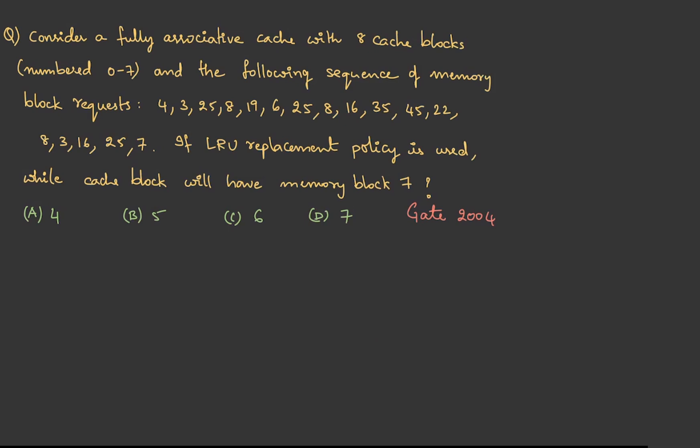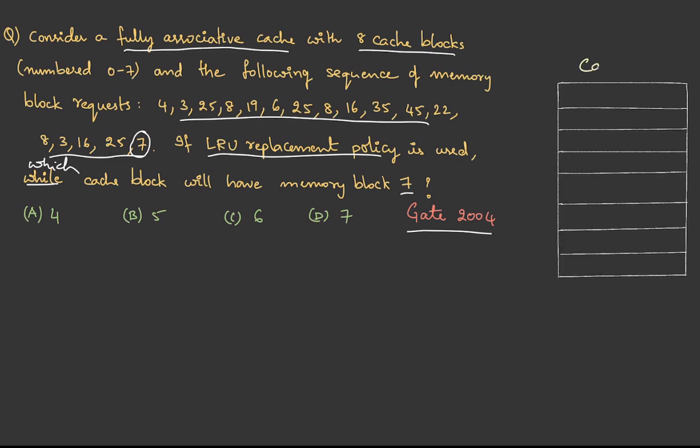Now let's try one GATE question. Here is a question asked in GATE 2004: Consider a fully associative cache with eight cache blocks numbered 0 to 7 and the following sequence of memory block requests. If LRU replacement policy is used, which cache block will have memory block 7? They're asking for a specific line number, so let me go with the positional listing. Let me draw the diagram showing the cache numbered from 0 to 7, and write down the memory requests.